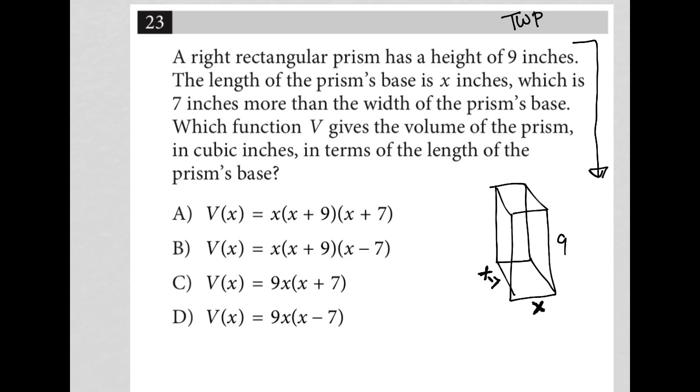The question goes on to say which function V gives the volume of the prism in cubic inches in terms of the length of the prism's base. Okay, so how do you find the volume for a prism? This is provided to you in your reference information on the digital SAT. You just have to click on that button and find the reference guide there that provides formulas for you. But the volume for a prism is just length times width times height, right? So length times width times height.